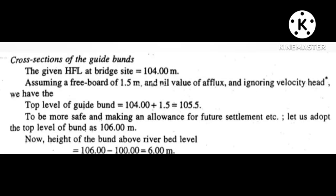Cross sections of the guideband. The given HFL at bridge site is equal to 104 meters. Assuming freeboard is 1.5 meters. Neglecting afflux and ignoring velocity head, the top level of guideband is equal to 105.5 meters.